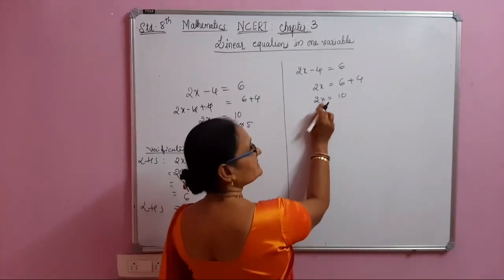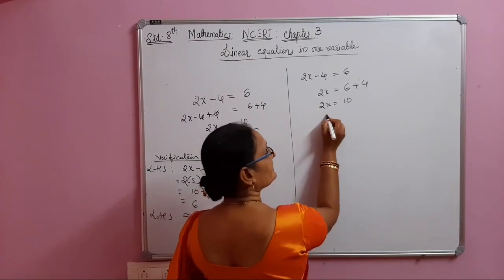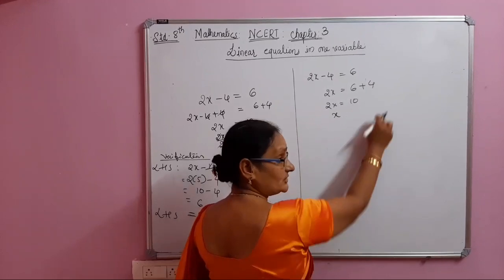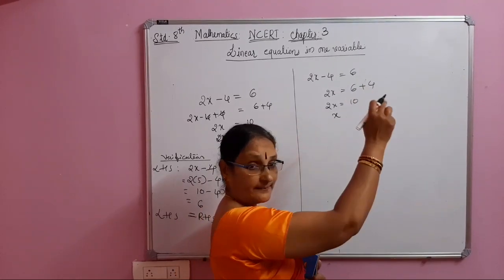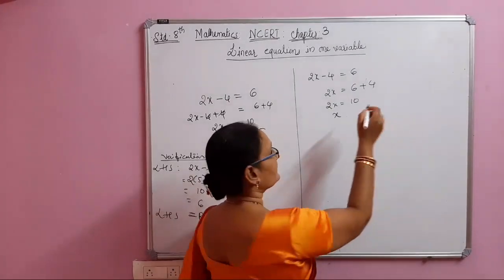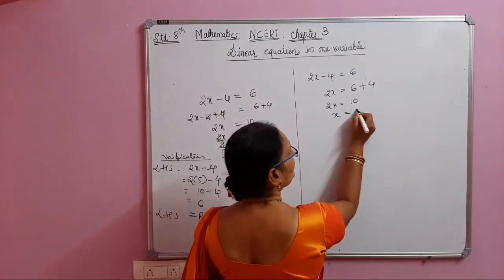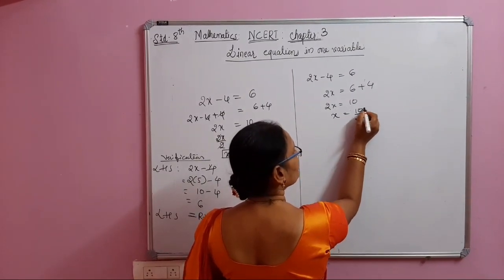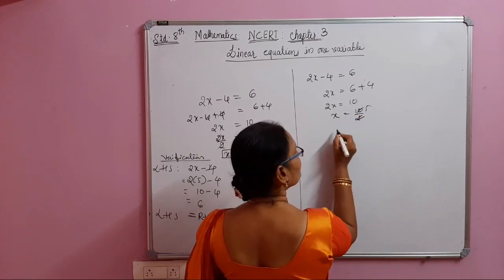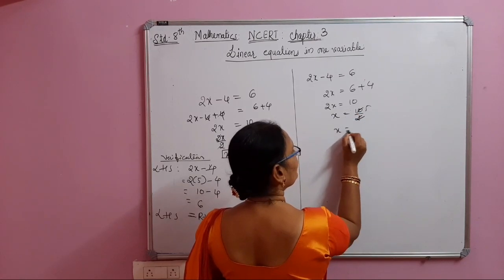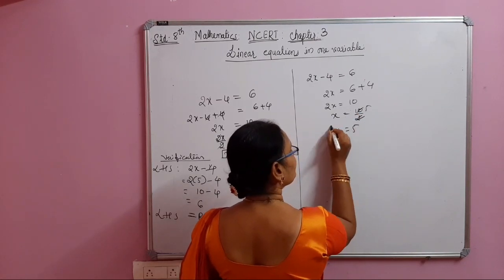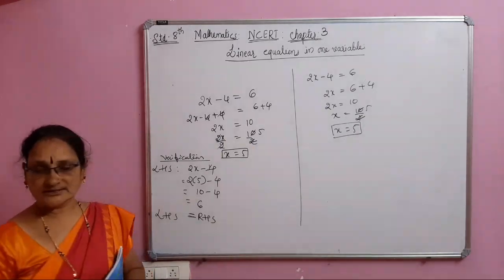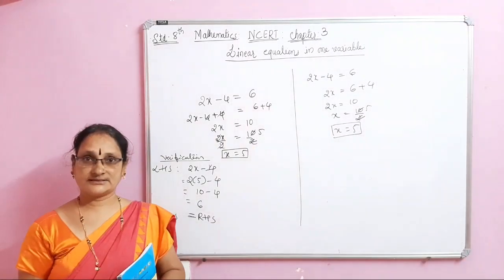Now 2 is along with x. Since it is multiplication on the LHS, when I send it to the RHS it becomes division: x equals 10 divided by 2, so x equal to 5. Same value — different method.